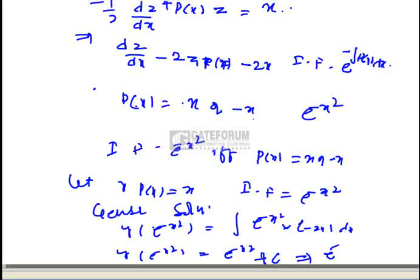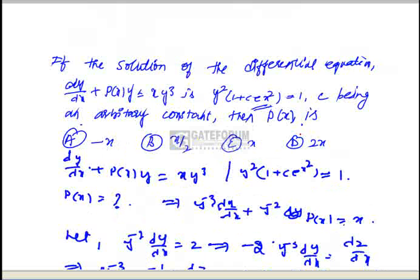Simplifying, we obtain the given solution of the equation. This confirms the integrating factor is e^(minus x²), so p(x) must equal x, which is option C.